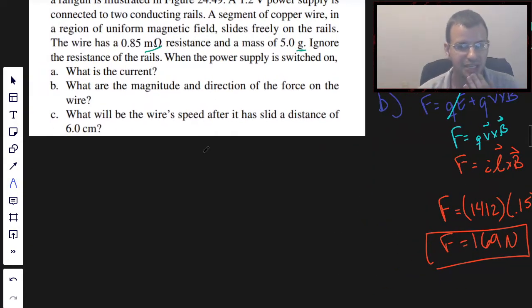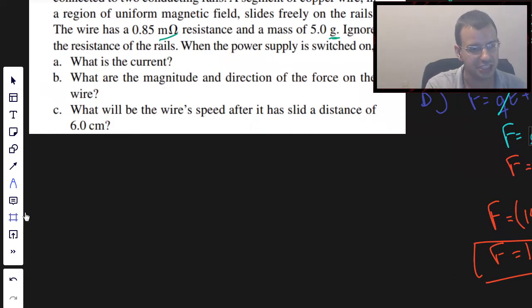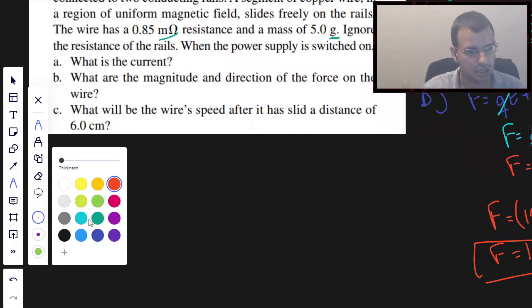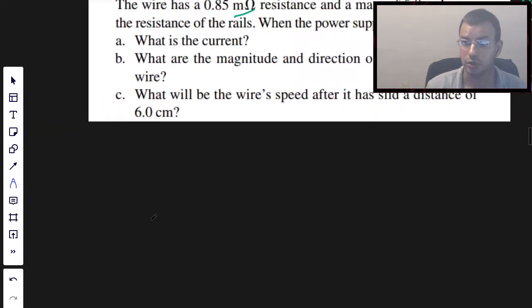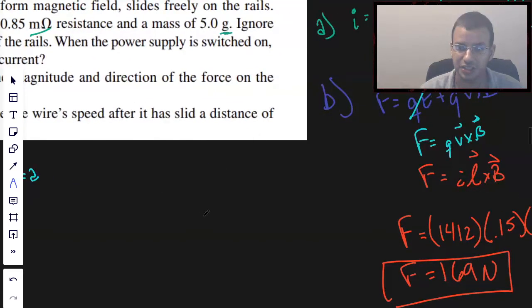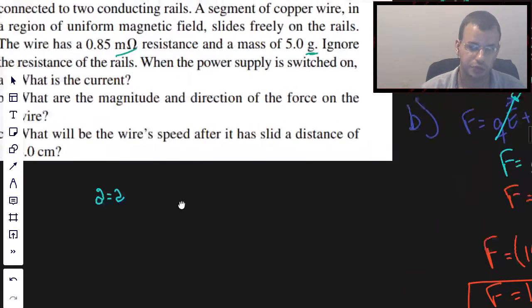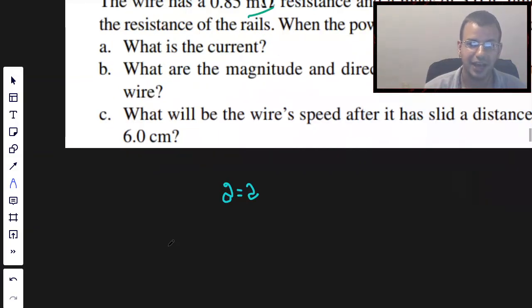What will be the wire's speed after it has slid a distance of 6 centimeters? So this actually harkens back to kinematic equations. So I'm going to write them up real quick. A equals A for a constant acceleration. We have a constant force. So force equals MA. Therefore, we're going to have a constant mass, therefore we're going to have a constant acceleration.